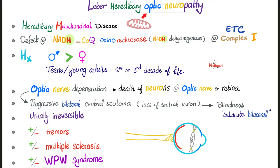In Leber hereditary optic neuropathy, we see optic nerve degeneration, which affects the neurons of the optic nerve. Since the optic nerve is connected to the retina — the sensory layer of the eye — the retina suffers and vision suffers. This can affect both eyes bilaterally, starting with the central vision. The central visual field is lost first, which is called central scotoma — a blind area in the center. The central scotoma gets bigger and bigger until the patient ends up with bilateral complete blindness. This blindness is subacute — not acute, not chronic, but somewhere in between.